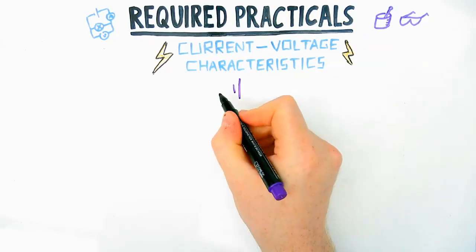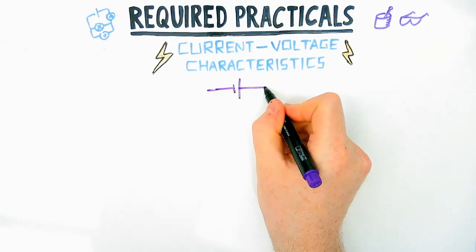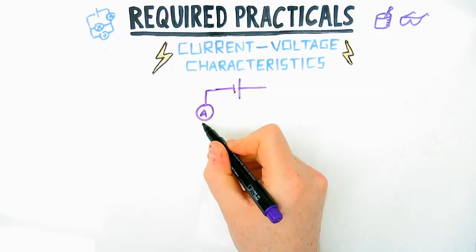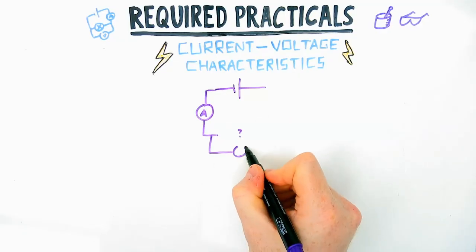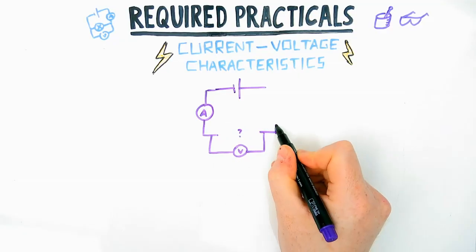A characteristic of something just means a property or how it behaves. So current voltage characteristic of a component just means how does the current and the voltage or PD vary for individual components.